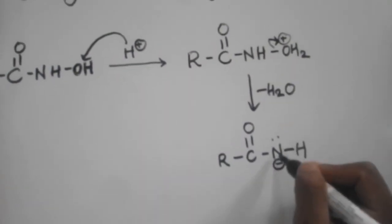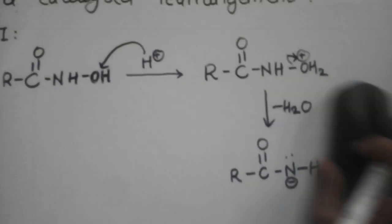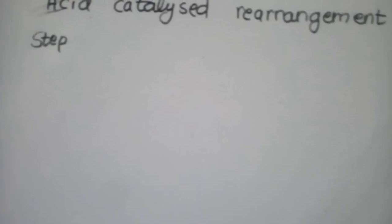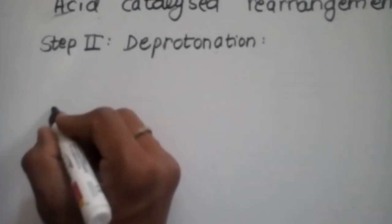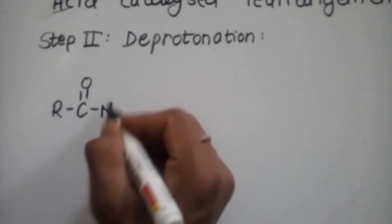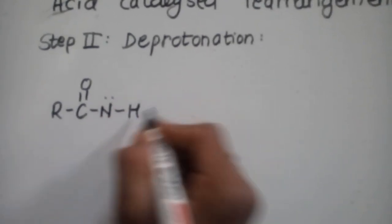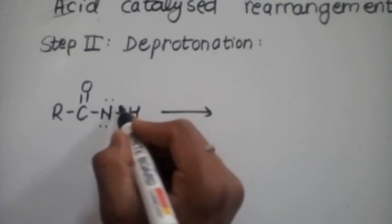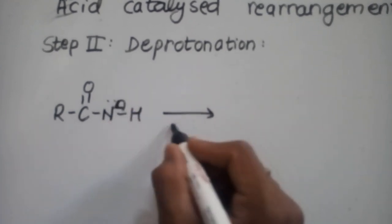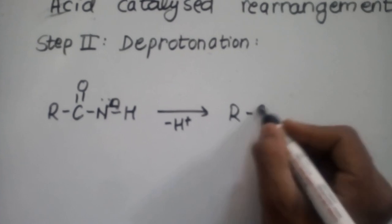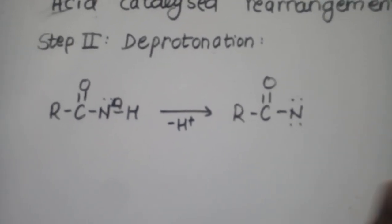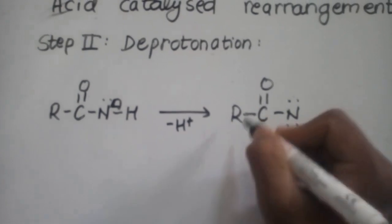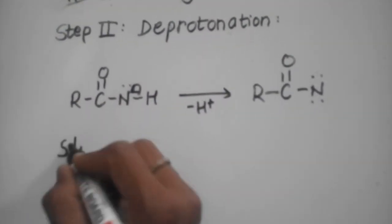In Step 2, deprotonation occurs — the H⁺ ion is removed and we get a nitrene intermediate. The nitrene formed here is unstable, so it undergoes rearrangement, which we call Lossen rearrangement, to form isocyanate.